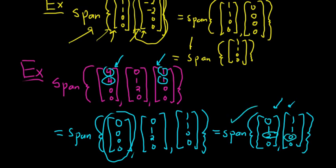I hope this video has been helpful. It's shown you how to remove vectors that are linear combinations of others from a span. Thanks for watching.